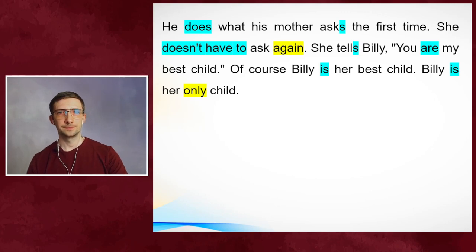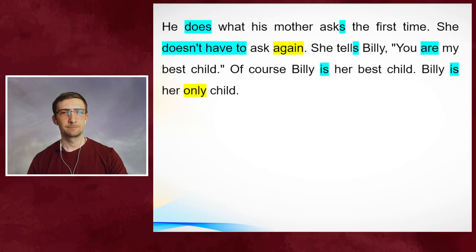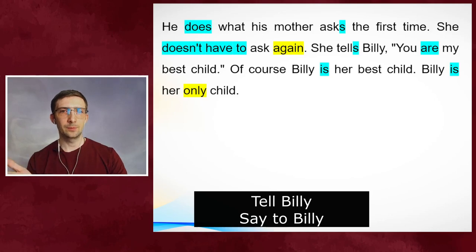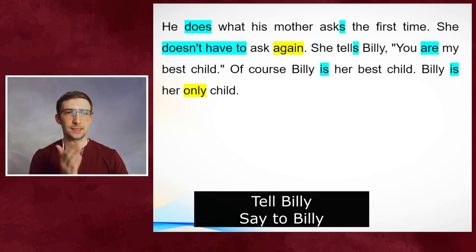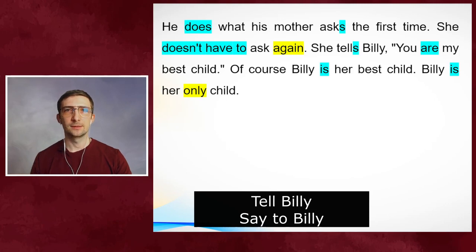She doesn't have to ask again. Repeat. She tells Billy, 'You are my best child.' Repeat. Look here — we have 'tell somebody' without any preposition. You can't say 'tell to Billy.' You can say 'say to Billy,' but 'tell Billy.' Let's continue.